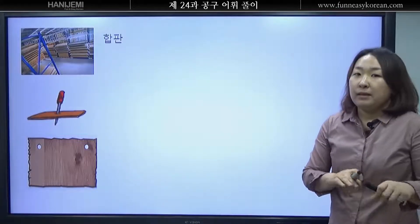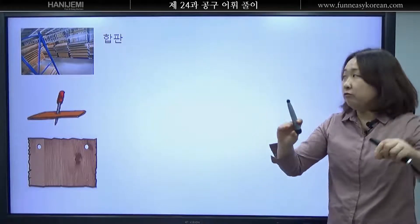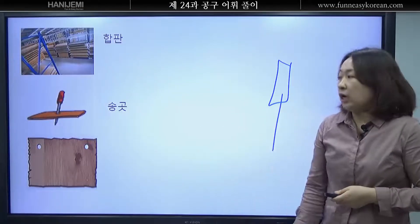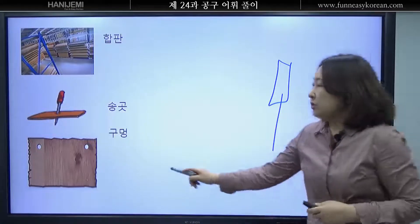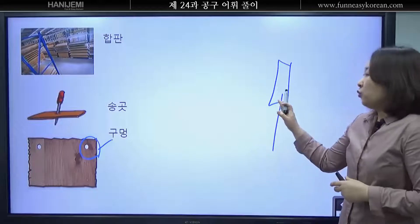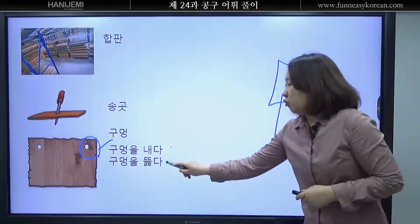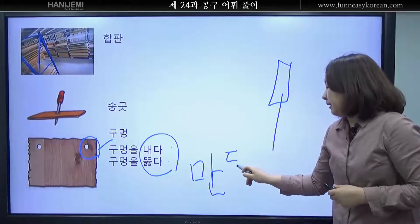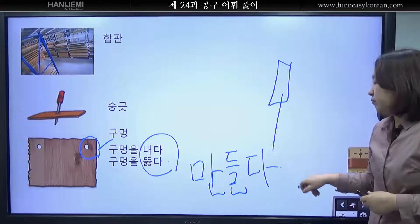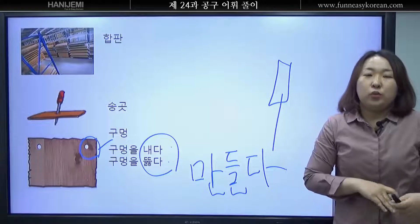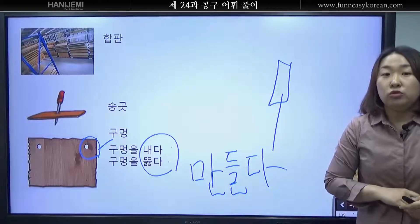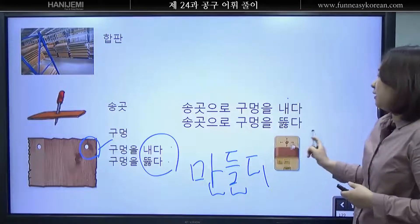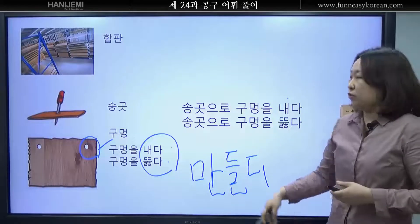여러분 이것이 합판이에요. 납작한 나무 합판입니다. 이것이 바로 송곳입니다. 자 송곳으로 무엇을 합니까? 여러분 이것이 구멍이에요. 자 송곳으로 어떻게 할까요? 구멍을 내다, 구멍을 뚫다. 이게 다 구멍을 만들다 라는 뜻입니다. 구멍을 내다, 구멍을 뚫다가 더 좋은 표현입니다. 송곳으로 구멍을 내다, 구멍을 뚫다 라고 이야기합니다.